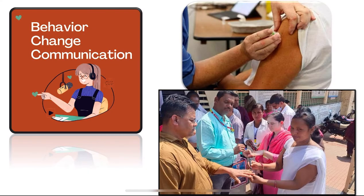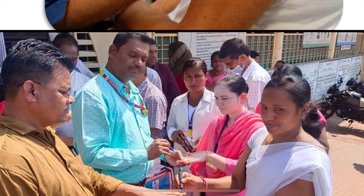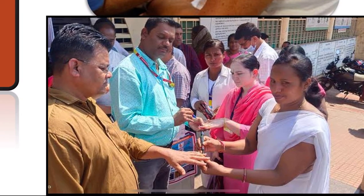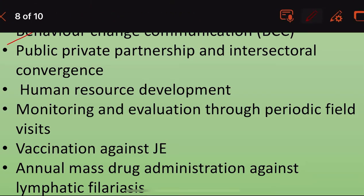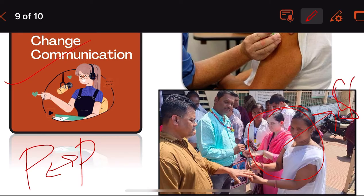Additional supportive interventions include vaccination against Japanese encephalitis and annual mass drug administration against lymphatic filariasis. So the supportive interventions are: behavioral change communication, public-private partnership, human resource development, periodic field visits for monitoring and evaluation, vaccination against Japanese encephalitis, and mass drug administration against lymphatic filariasis.